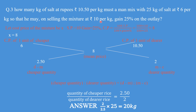He is selling the mixture at 10 per kg — so we have the selling price of the mixture as 10. This 6 and 10.50 are cost prices, but 10 is the selling price and cannot be placed directly into our table. You have to calculate the cost price first. Generally students make this mistake — be very careful. So first you have to calculate the cost price of the mixture.